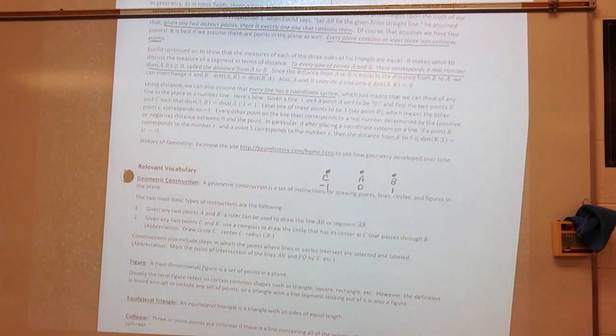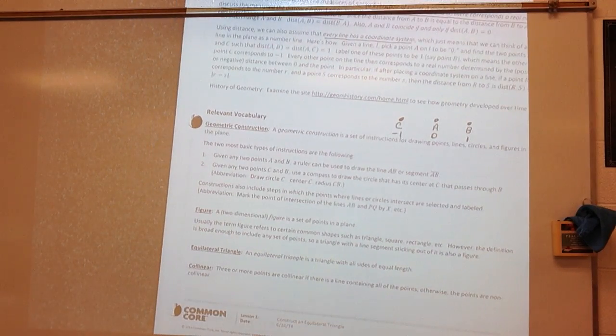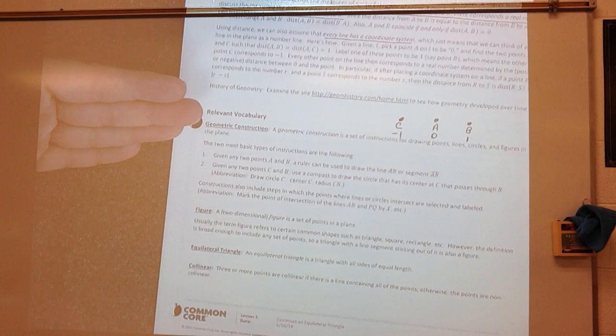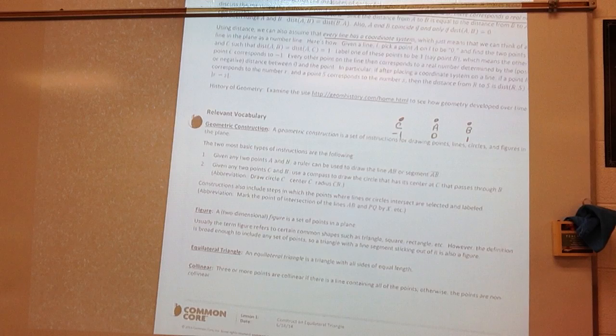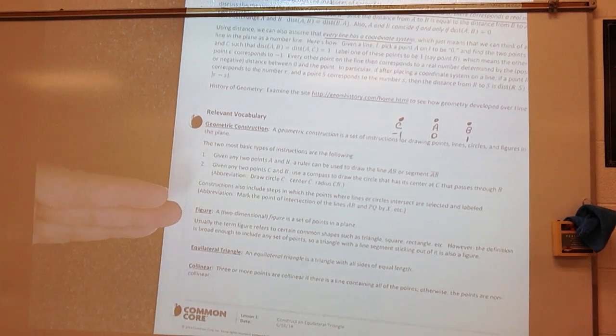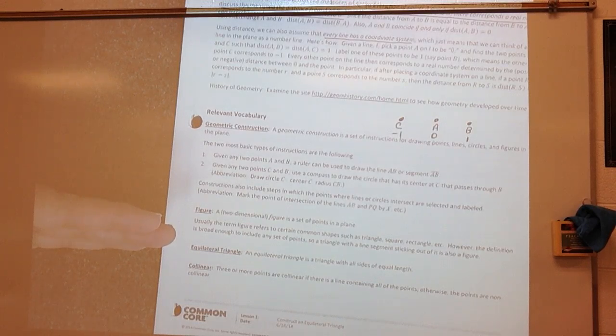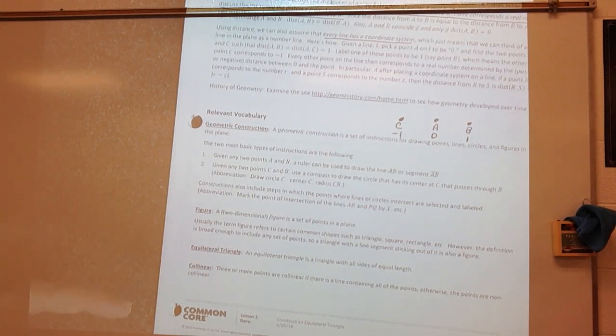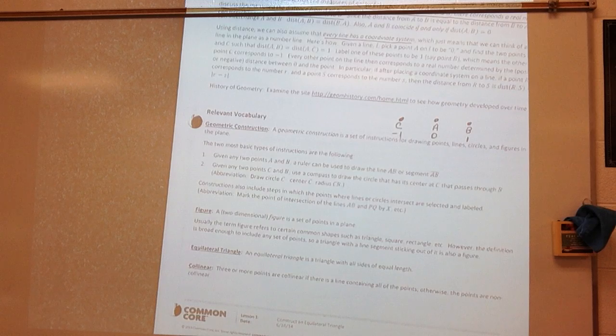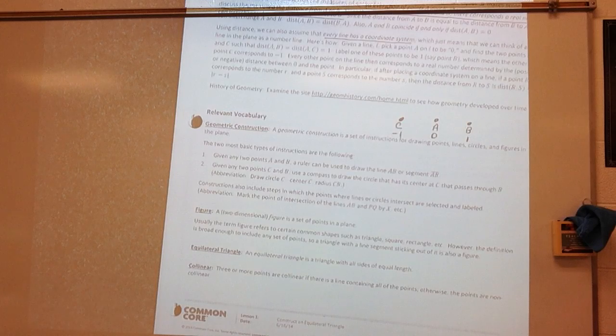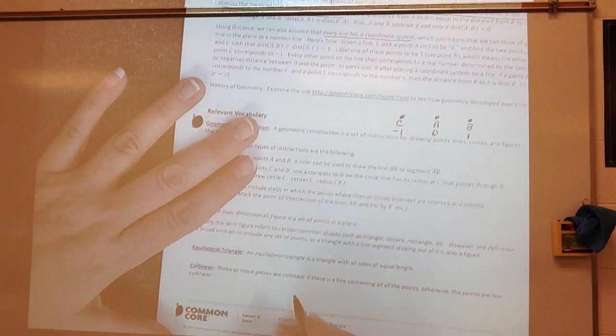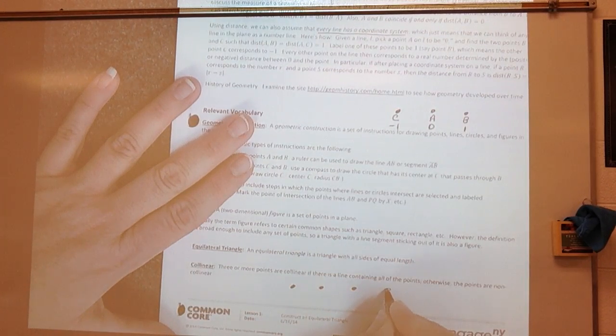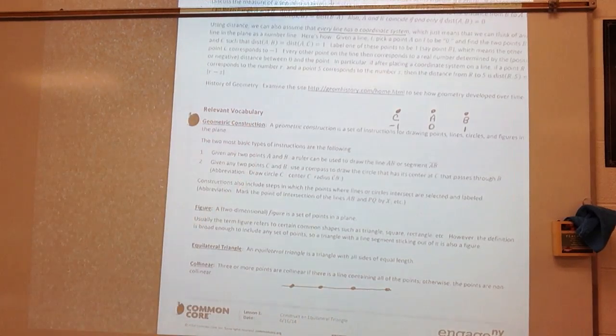Alright, you have a lot of vocabulary here. Please make sure that you go through that vocabulary. Guys, it is super important. This vocabulary will build the basis of our geometry this year. So, you need to know what it means to be given a geometric construction, which is what we just did. We constructed an equilateral triangle. A figure, a two-dimensional figure, is a set of points on a plane. That can be a line, a triangle, a rectangle, a square. Alright, know the definition of an equilateral triangle. Collinear, alright, it's important you hear that word, collinear. That means there are three or more points on the line. There's a line containing all those points. So, if they're collinear, that means I can draw a line straight through them. And I'm going to hit every one of them. Okay?